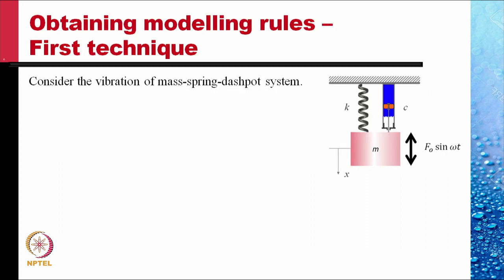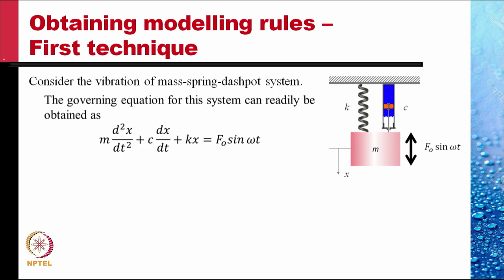To introduce the first technique of obtaining these rules from the governing equations, let us consider the vibration of a spring-mass-dashpot system. There is a mass connected to the surroundings through a spring and a dashpot, subjected to a periodic force F₀ sin(ωt). The governing equation for this system is: m d²x/dt² + c dx/dt + kx = F₀ sin(ωt).